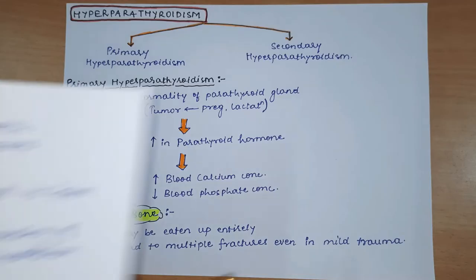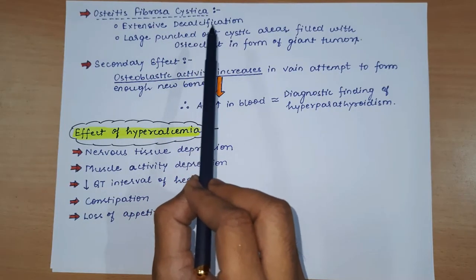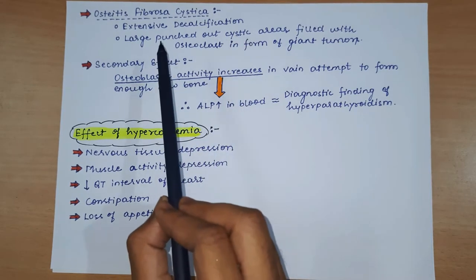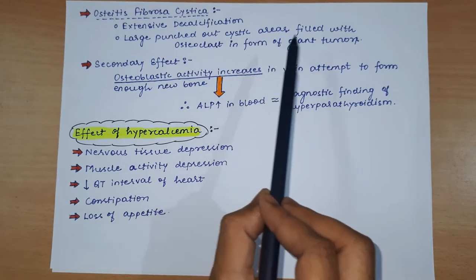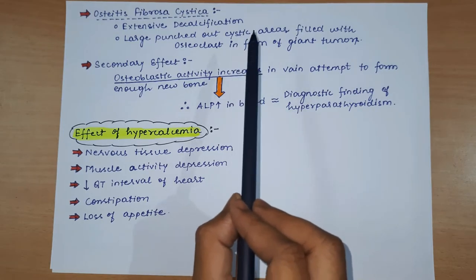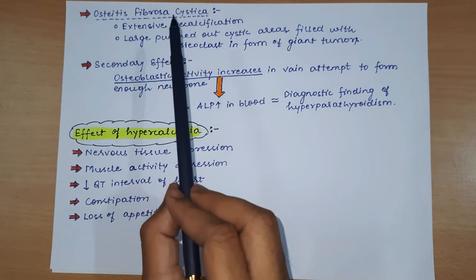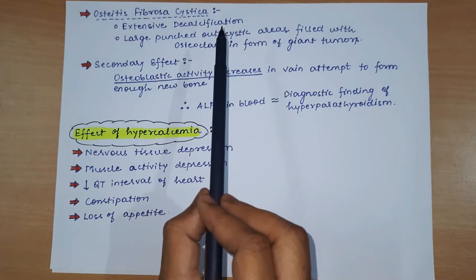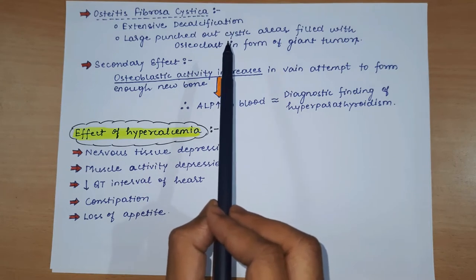Also, osteitis fibrosa cystica can be seen in the bone. This is the extensive decalcification of the bone, because parathyroid hormone is present in a very high amount. Large punched out cystic areas develop due to the presence of osteoclasts in the form of giant cell tumors. These areas filled with osteoclasts - punched out, depressed areas in the form of tumors - this condition is called osteitis fibrosa cystica. Finally, the bone becomes very highly probable for injury and multiple fractures, even in mild trauma.